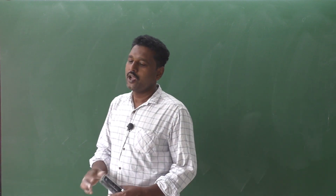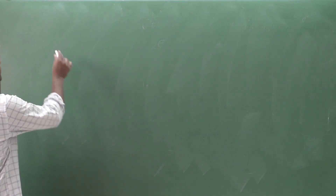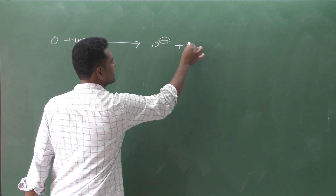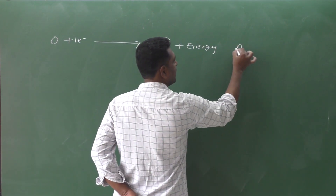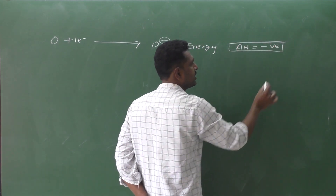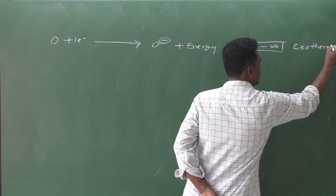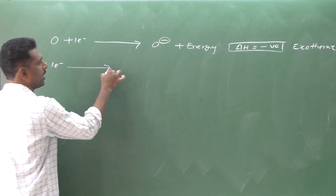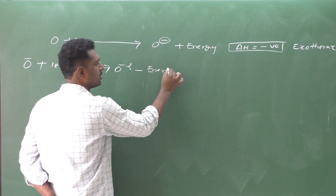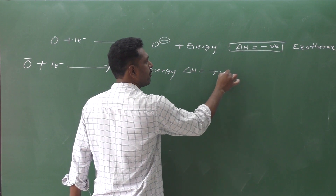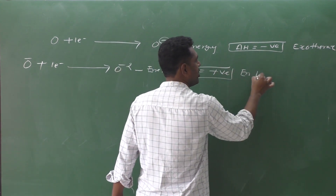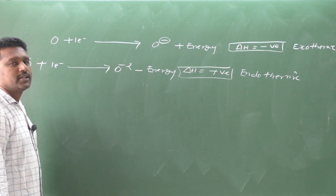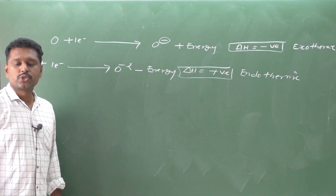For example, take oxygen: O plus one electron gives O minus plus energy. Then O minus plus one electron gives O minus minus, requiring energy input, so delta H is positive — that is an endothermic reaction.